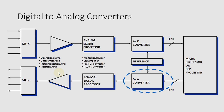In the basic digital to analog converter, the signal comes through the multiplexer, which is a multiple input, single output system. This output goes to an operational amplifier, which could be a differential amplifier or an instrumentation amplifier. Then the signal goes to an analog signal processor, which may be a multiplier, divider, or log amplifier.